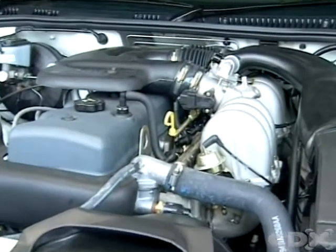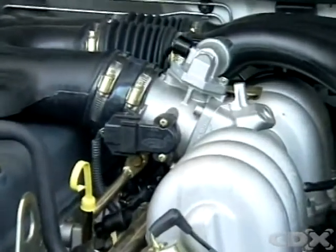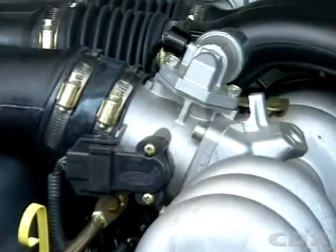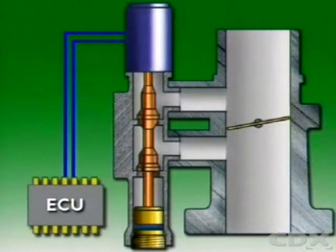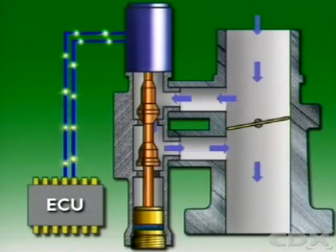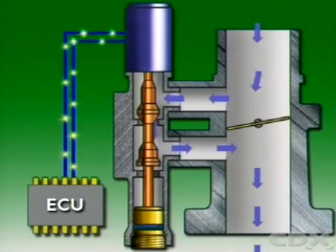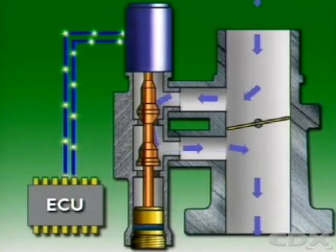The solenoid type air control valve acts on signals from the control unit to bypass a measured air flow around the throttle plate. The position of the valve depends on how much current the control unit applies to the solenoid. Maximum current flow opens the valve fully to give maximum air flow. This is generally the assumed position for starting.